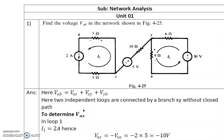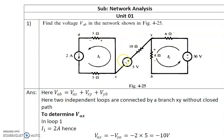Hello everyone, welcome to assignment 2 on network analysis. It is based on mesh analysis. In the first problem, we have to calculate the voltage VAB in the following network. VA is this point and VB is this point. VAB is nothing but VAX plus VXY plus VYB. Adding these voltages will give us VAB, so it is necessary to calculate all these voltage drops.